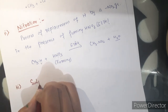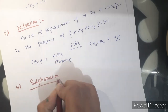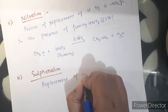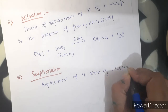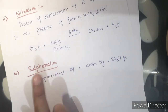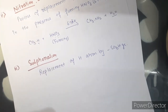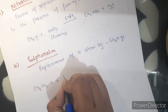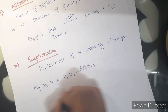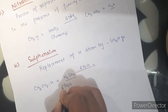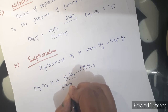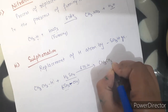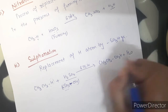Third substitution is sulfonation — the replacement of a hydrogen atom by the sulfonic group (SO3H). Sulfonation is carried out in the presence of sulfuric acid (H2SO4) at temperature 675 Kelvin. When ethane reacts with sulfuric acid at 675 Kelvin, hydrogen is replaced by the SO3H group along with water. This is known as sulfonation.